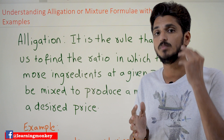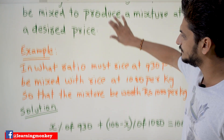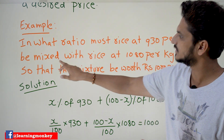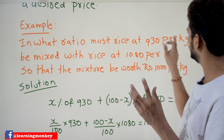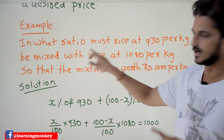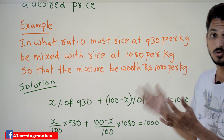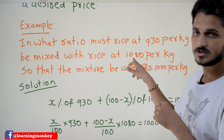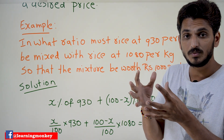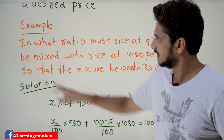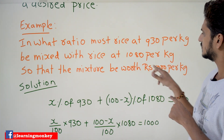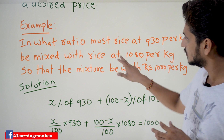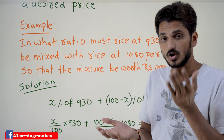With an example we are going to understand it better. In what ratio must rice at ₹930 per kg be mixed with rice at ₹1080 per kg? These are the two ingredients — one item costs ₹930 and the other costs ₹1080 — so that the mixture is of a desired price, which is ₹1000 per kg.